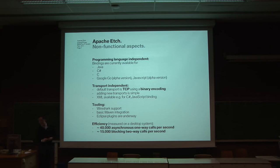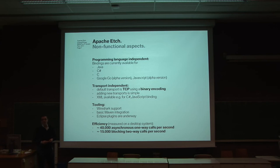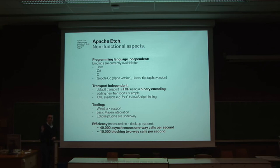Efficiency is quite important. I don't have time in these 15 minutes to make a big comparison with all the other frameworks — there's data on the website for that. But to give you an impression: with asynchronous one-way fire-and-forget calls, we reach around 40,000 function calls per second on a normal desktop system. Compared to an HTTP-based, XML-based web service framework, you end up with a factor of 10 to 100 slower. Even with blocking calls, we reach 15,000 calls per second. This is really meant for performance-critical embedded applications and higher-scale networks.